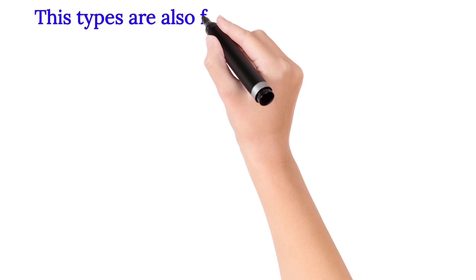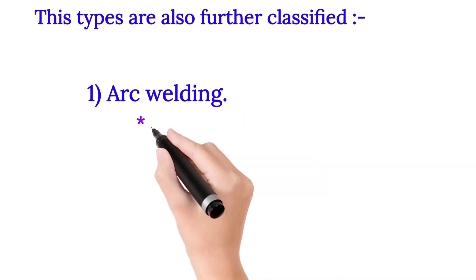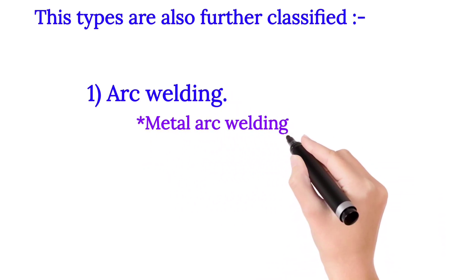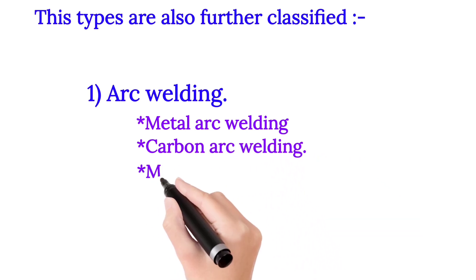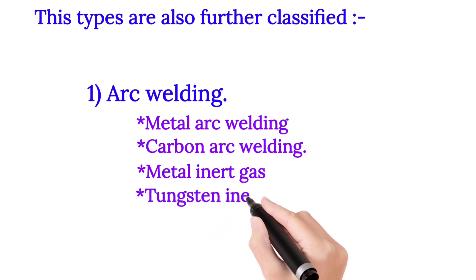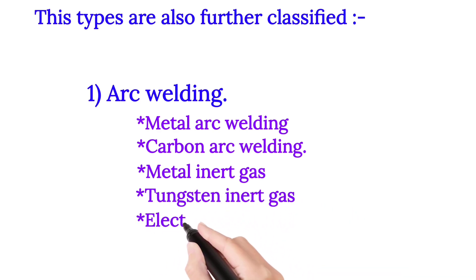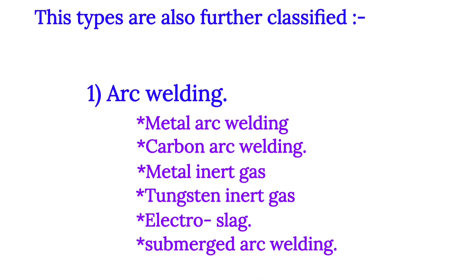These types are also further classified. Number 1: Arc welding. Metal arc welding, carbon arc welding, metal inert gas, tungsten inert gas, electro slag welding, submerged arc welding, plasma arc welding.